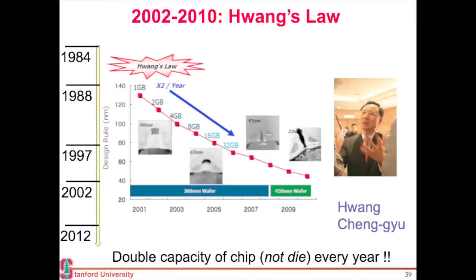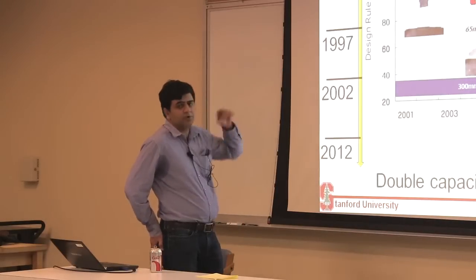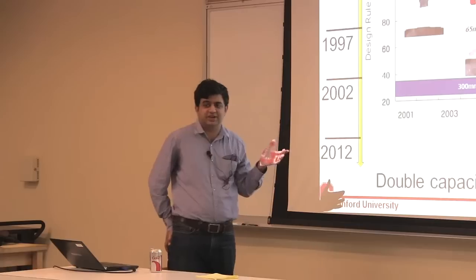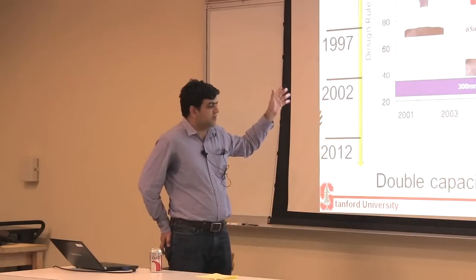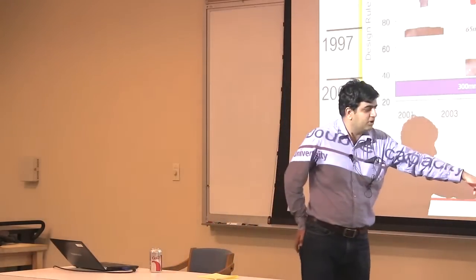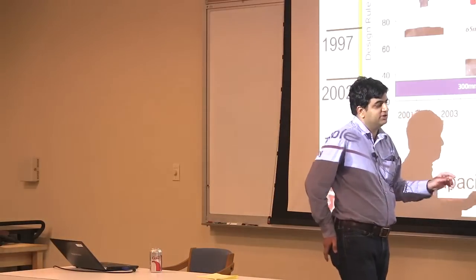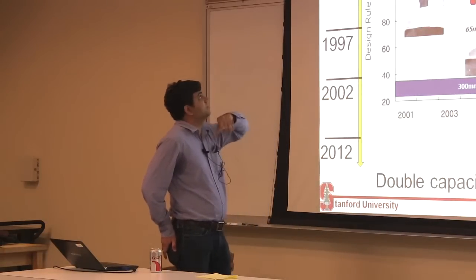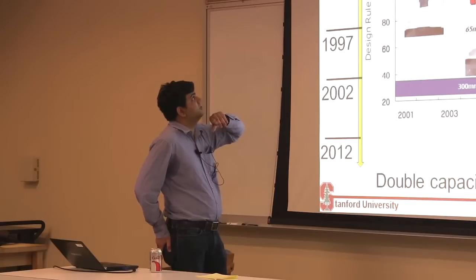Then from 2002 to 2010, which is really the post-PC era, the flash memory capacity has doubled every year. It's also known as Huang's Law, and it's a more aggressive law than Moore's Law. Moore's Law says that your capacity should double every 18 months. This law is that your total capacity that you can buy in one chip, not one die, should double every year. And in fact it has been progressing at that rate from 2002 to 2010.